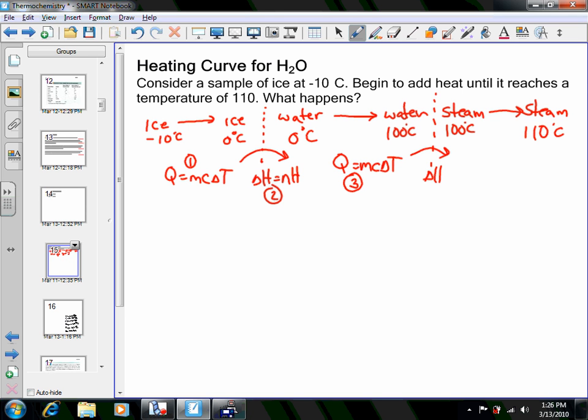Then a phase change from water to steam, delta H equals NH, step four. And the fifth one is your last heat change, Q equals MC delta T. So lots of work to do, five different steps to calculate.